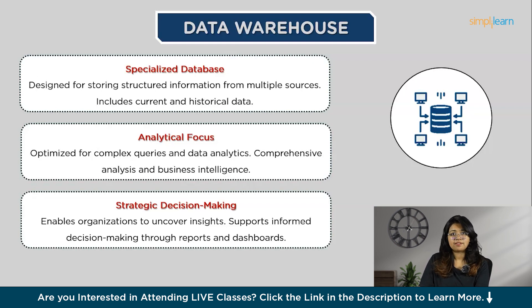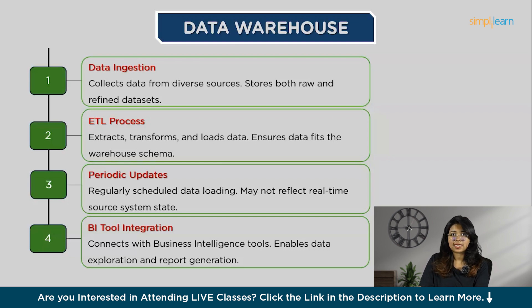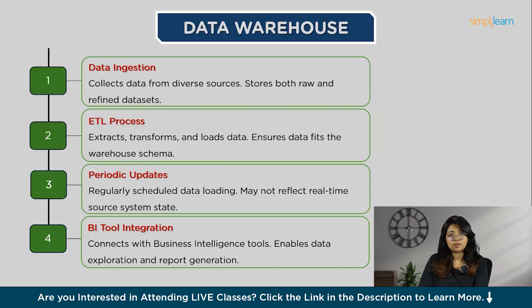A data warehouse serves as a centralized repository designed to store large volumes of both current and historical data gathered from diverse sources — ranging from raw ingested information to highly refined, cleansed, filtered, and aggregated datasets. The process of moving data into a data warehouse is managed through extract, transform, load — or ETL — which extracts data from its original sources, transforms it to fit the warehouse schema, and loads it on a regular basis such as hourly or daily schedules. This means the data warehouse may not always reflect the most current state of the original systems.